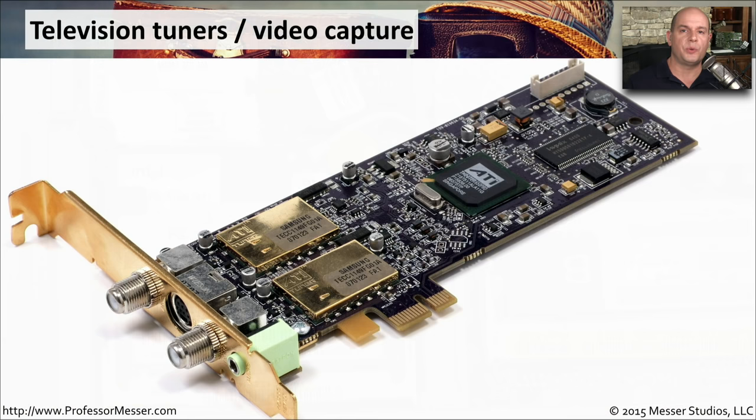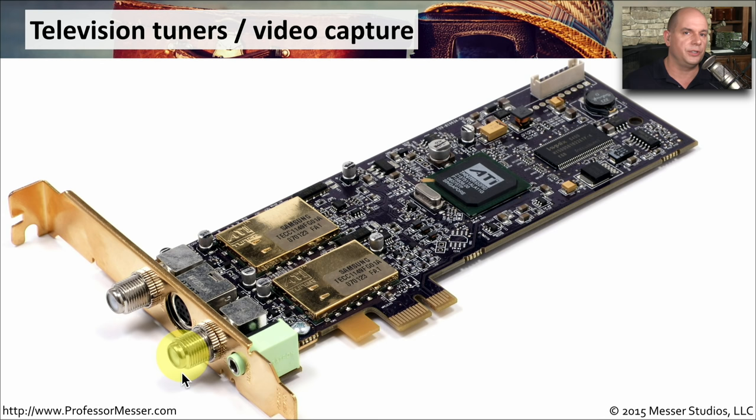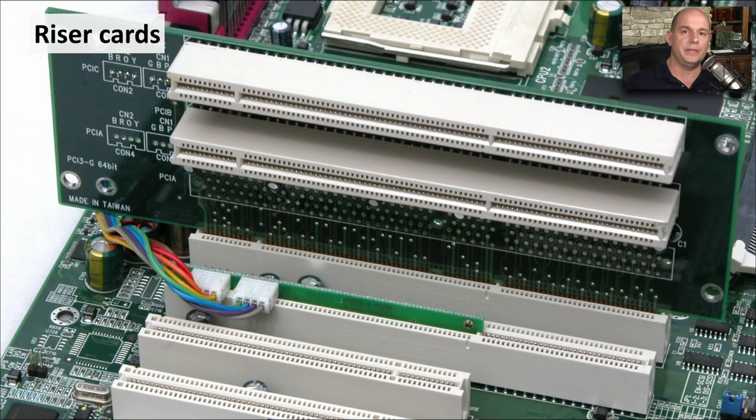These days we're putting computers next to our televisions and wanting to grab signals from the internet, from our cable connections, and even over the air. To be able to do that, we may want to add a television tuner or a video capture card that's able to receive information over standard F connectors and save that as digital signals on your storage device.